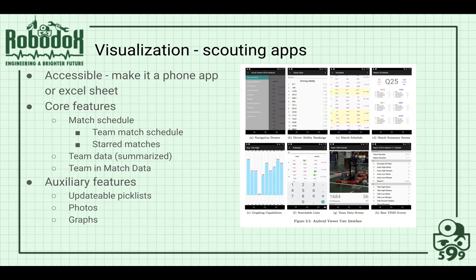For visualization, you want something accessible — either a phone app or an Excel sheet. The third alternative for paper systems is a Slack or Discord channel for transmitting data to captains or strategists. Core features should include a match schedule so you don't have to switch apps, the ability to see match data including overall score, ranking points, who won, and the actual scoring breakdown — for instance, clicking on a team number to pull up their data from that specific match or their average data overall.